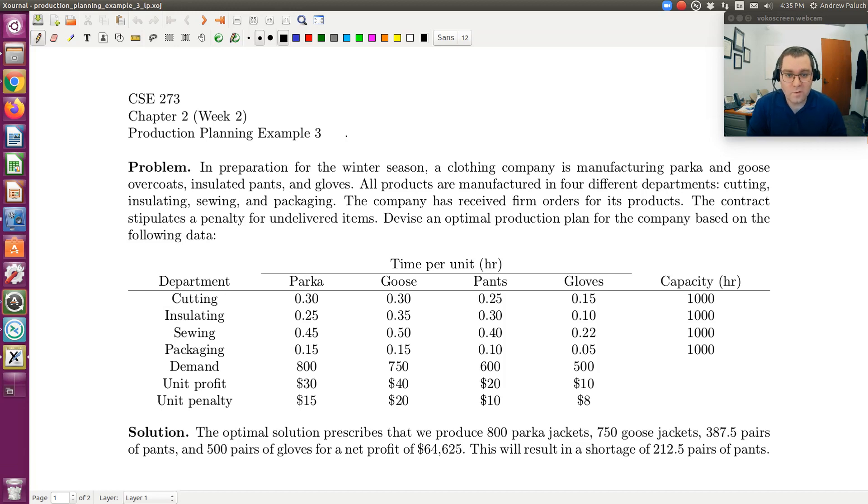So in preparation for the winter season, a clothing company is manufacturing parka and goose overcoats, insulated pants and gloves. All products are manufactured in four different departments: cutting, insulating, sewing, and packaging. The company has received firm orders for its products. The contract stipulates a penalty for undelivered items. Devise an optimal production plan for the company based on the following data.